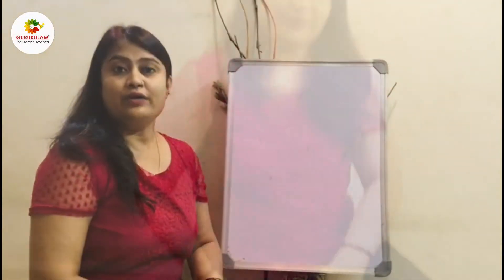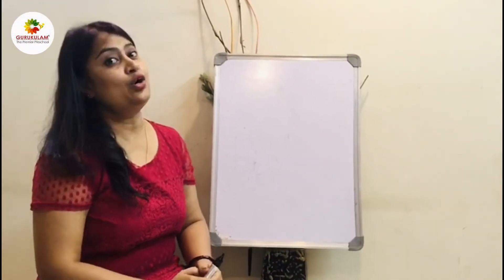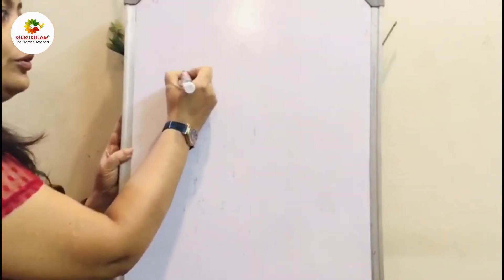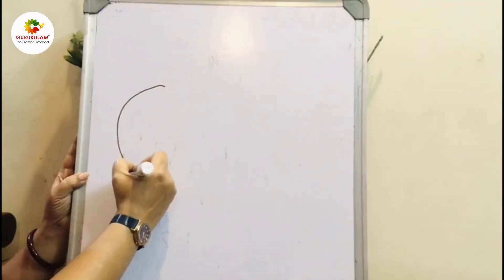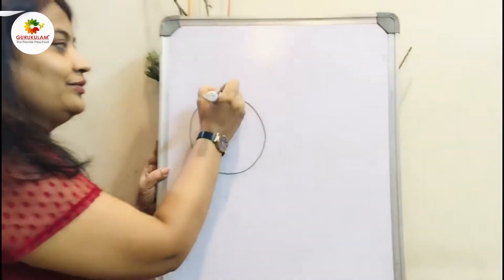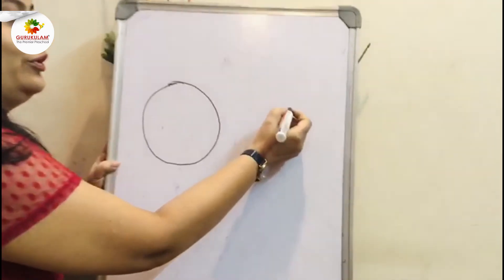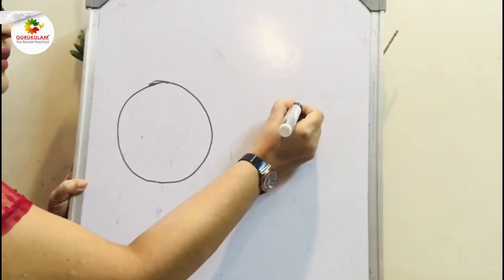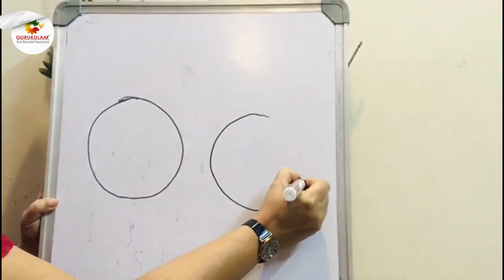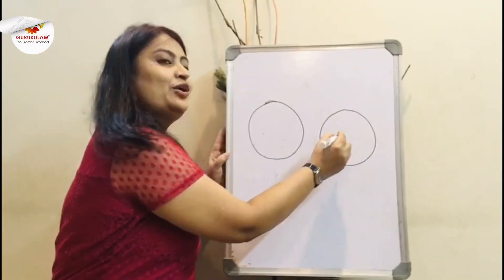Now kids I will show you how to write letter O. One curve, one more curve — letter O. One more time: around, around, around. That's letter O.